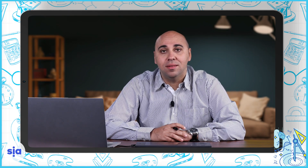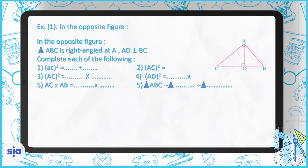Let's go to the exercise part. Exercise number one: in this figure, ABC is right-angled at A, and AD is perpendicular to BC. For question one, find AC² as a sum of two terms. Since it involves addition, we're using the Pythagorean theorem: AC² = CD² + AD².